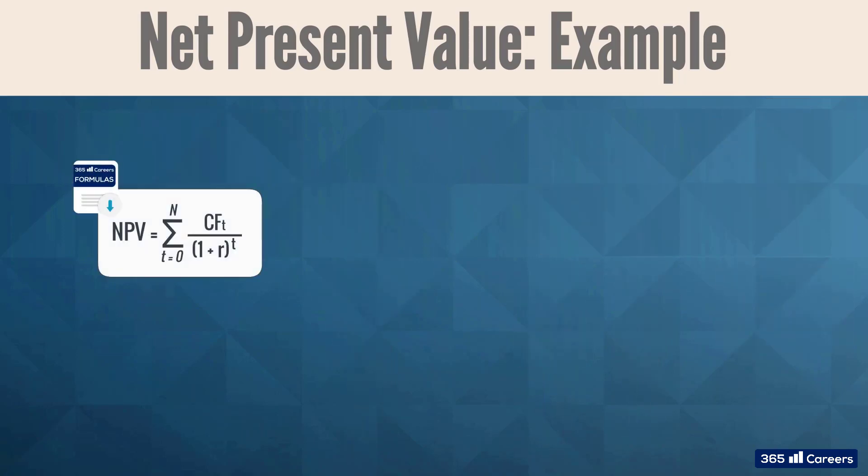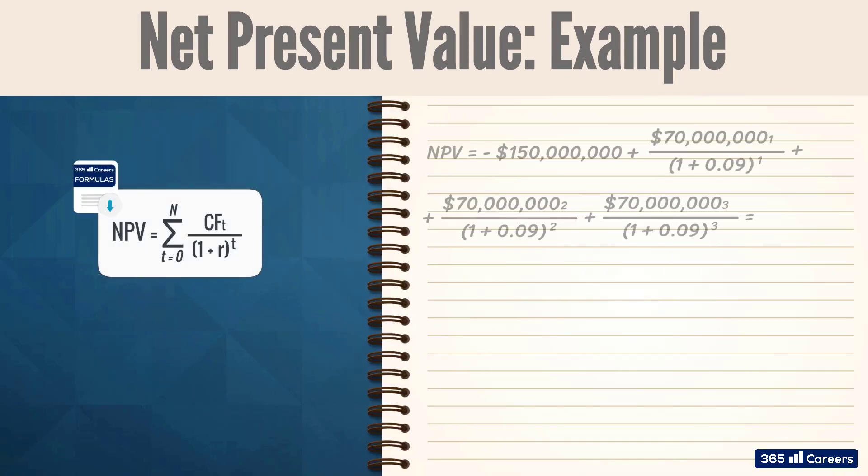Right. Let's apply the formula for NPV. By substituting the parameters, we obtain the following. The initial cost of the new plant is $150 million, which is denoted with a negative sign because this is a cash outlay.